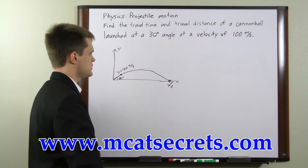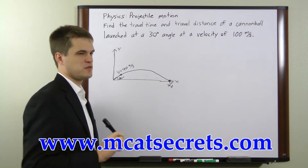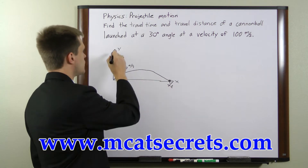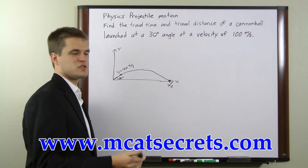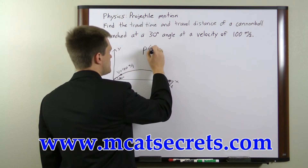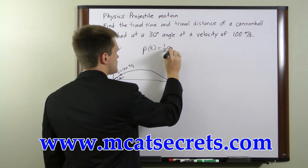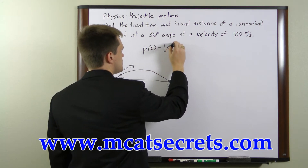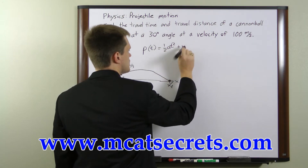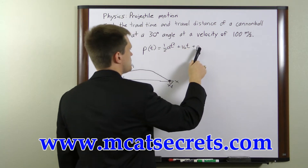To solve this, we're going to need to use equations of motion. Since it's two-dimensional, we're going to have to use two different equations of motion — one for the X direction and one for the Y direction. Your basic equation of motion looks like this: position at time t equals one-half times the acceleration of the object times t squared, plus your initial velocity, v-naught, times t, plus your initial position, p-naught.